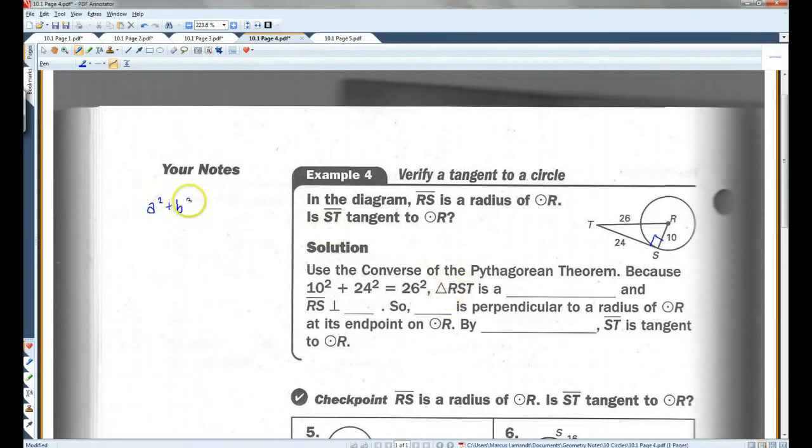So we're going to use the converse of the Pythagorean theorem because 10 squared plus 24 squared equals 26 squared, let's write this out over here. We have A squared plus B squared equals C squared. In this case, 10 squared plus 24 squared equals 26 squared. 10 squared is 100.